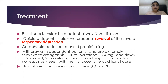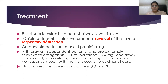The first step in treatment is to establish a patent airway and ventilation. An opioid antagonist can be given along with assisted ventilation and oxygenation. Naloxone, which is the antagonist of opioids, produces a reversal of respiratory depression. Care should be taken to avoid precipitating withdrawal in dependent patients who are extremely sensitive to antagonists. Dilute naloxone 0.4 mg should be slowly administered IV, monitoring arousal and respiratory function. If no response is seen with the first dose, give additional doses. In children, the dose of naloxone is 0.01 mg per kg.